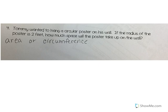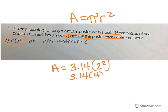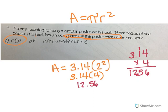Tommy wanted to hang a circular poster on his wall. If the radius of the poster is 2 feet, how much space will the poster take up on the wall? How much space will the poster take up — that means I'm talking about area. So the formula for area is A equals πr². Area equals 3.14 for pi, times radius is 2, so times 2 squared. Well, 2 squared is 2 times 2, so that's 3.14 times 4, which gives me 12.56. My answer isn't just 12.56 — the unit is feet and it's area, so it's square feet. My answer is 12.56 square feet.